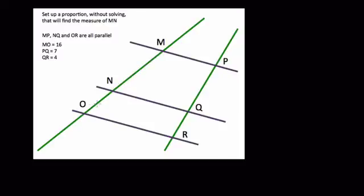And the way we're going to do that is using the side splitter theorem. Now it turns out that they tell us that MO is 16. That's the total length right here. And PQ is 7. And QR is right here. That's 11.